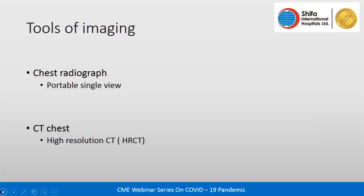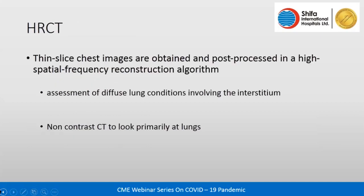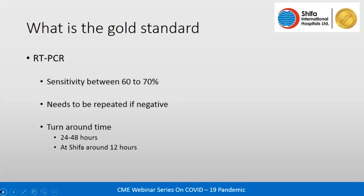The gold standard is PCR testing. Published sensitivity numbers were 60 to 70 percent in initial studies, but improved kits now achieve more than 90 percent sensitivity. If the first PCR test is negative it needs to be repeated. Regarding turnaround time, Shifa reports results in six to seven hours. As for CT, in the initial phases in China, a shortage of PCR testing kits led to HRCT being proposed as an alternative, with two initial studies from Wuhan reporting 97 to 98 percent sensitivity.